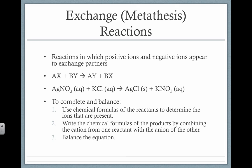If we have ionic compound AX and ionic compound BY, A and B are positive ions. They separate because they're soluble in water, and the negative ions switch. So A combines with Y and B combines with X. This has to happen because you have to have a positive and negative ion come together — you cannot have two positive ions or two negative ions come together.